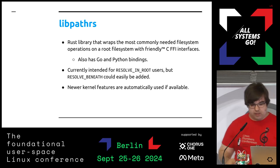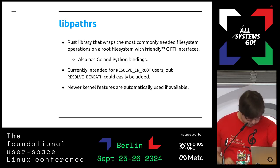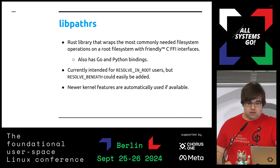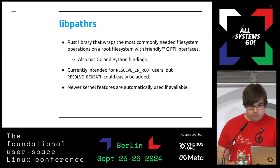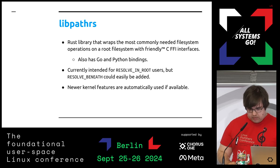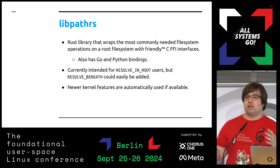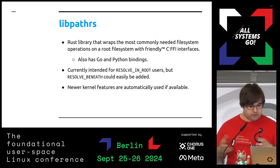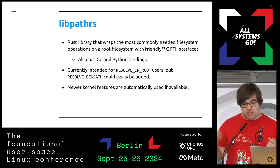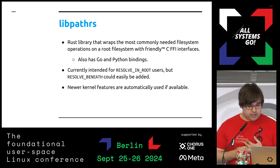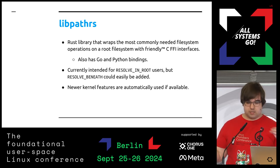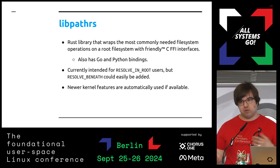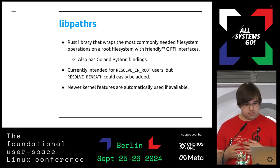So what libpathrs is: it's a library that I wrote, written in Rust, but it has a C FFI interface you can use from C very easily. It wraps all the most common interfaces you need for operating on a root filesystem or any kind of filesystem where you want to keep things scoped. It has C and Go bindings. Currently it basically just does the chroot-scoped stuff, because that's the main thing we need for containers.